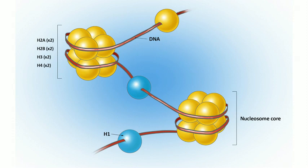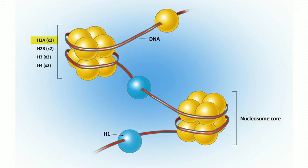DNA is really, really long, so to pack it into the nucleus it hangs out in a super condensed form called chromatin, which is DNA plus specialized proteins called histones. Eight specific histone proteins come together and the DNA strand wraps around them twice — that unit is called a nucleosome. The core histones are histone 2A, 2B, 3, and 4 — two of each for a total of eight.